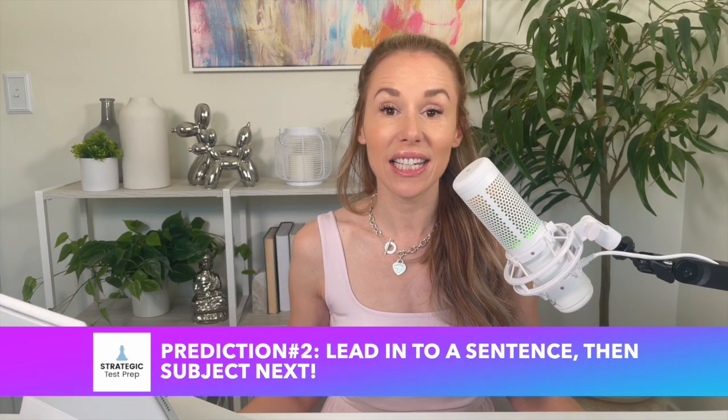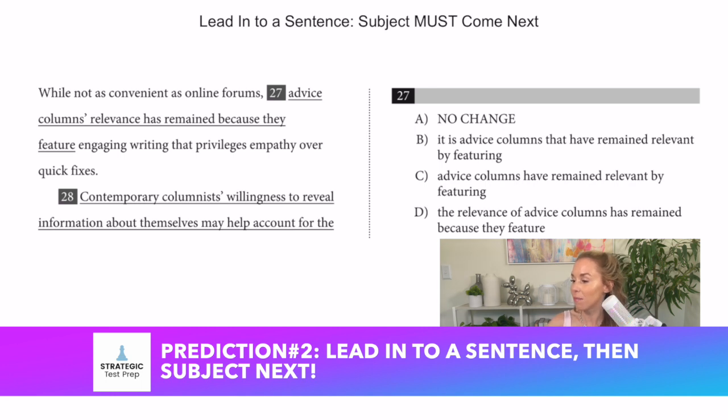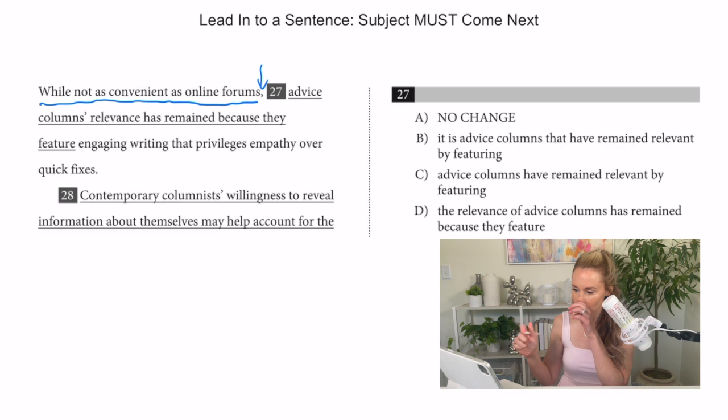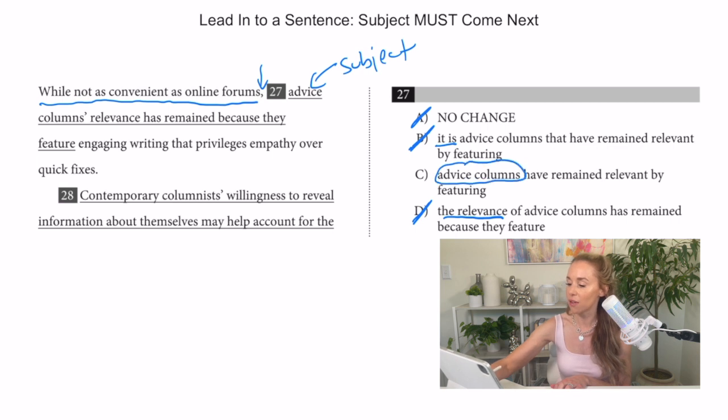All right. The next thing we're going to talk about is a lead into a sentence. You guys, if you have a lead into a sentence, what I mean by that is they're starting to introduce what they're about to talk about. And then they put a comma right after it. That's like an introduction comma. What comes right after that has to be the subject or what they're talking about. So in this example, it says, well, not as convenient as online forums. Well, whatever it is that's not as convenient as online forums is the subject. And that's got to come next. So it is not what's convenient. That's not the subject we're going to cross off B. Relevance can't be convenient. So we're going to cross off D. And advice columns relevance is not what is convenient. We're not comparing that to online forums. So we've got to cross off A. The only subject that makes sense is the advice columns themselves. So we're going to pick C. Expect something like that on your test. I've been seeing that coming up a lot.